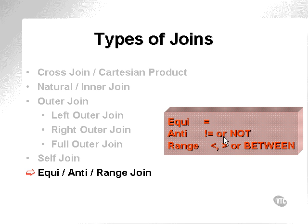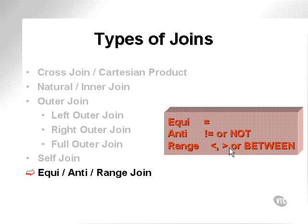Equi-joins, using equal signs, generally do exact matches and are faster than anti-joins, which, since they are doing the negative of the equals — searching for something that's not — generally resort to full table scans. Range-joins are generally faster than anti-joins but a little slower than equi-joins because they do range-index scans.